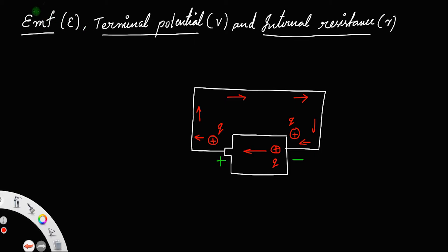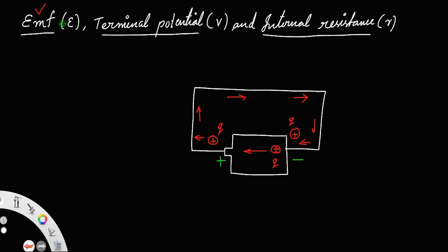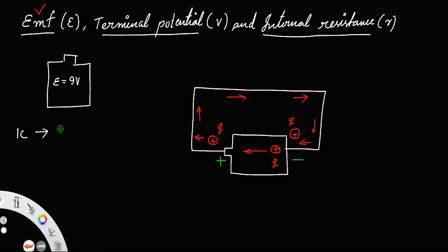That work required is what we call the electromotive force. It is termed electromotive force, but it is not actually a force — it is a potential. Suppose you have a cell and its rated voltage is 9 volts. This rated voltage is the EMF. What this means is that for one coulomb of charge, it can provide 9 joules of energy — that is, 9 joules per coulomb equals 9 volts.